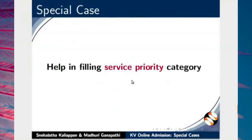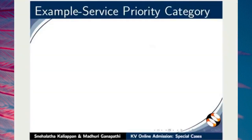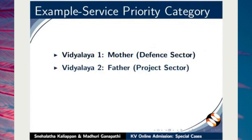Next, I will demonstrate how to use help in filling service priority category. Here I have opened the choice of school section of an online application form. For demonstration, I have taken the following examples to fill the choice of school section for a child. With Vidyalaya 1, we have chosen service priority of mother who is an employee of the defense sector. With Vidyalaya 2, service priority of father who is an employee of ONGC.